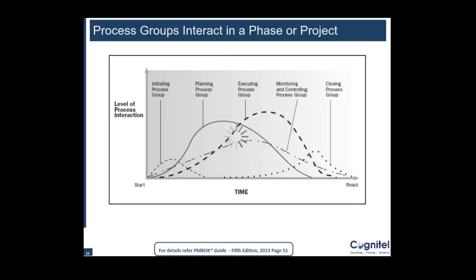Now let's look at one of the graphs. This particular graph is talking about how the process groups interact in a phase or a project. On the y-axis, or on the left-hand side, you would find the level of interaction, and on the x-axis is the time.